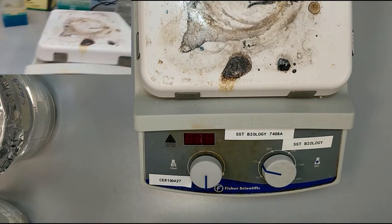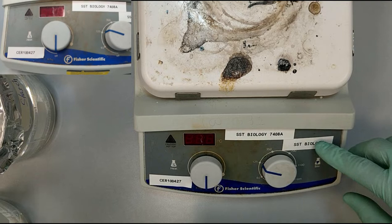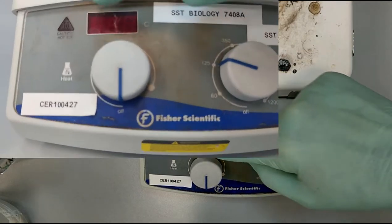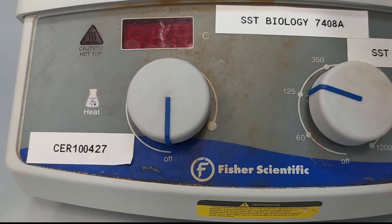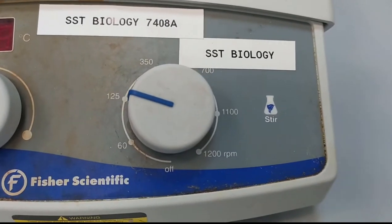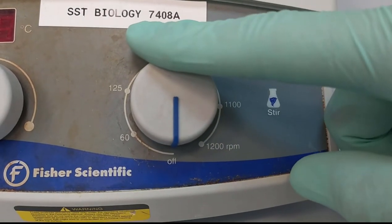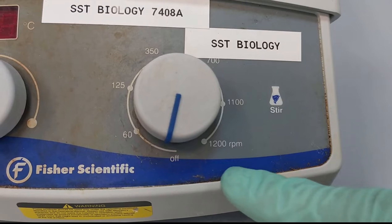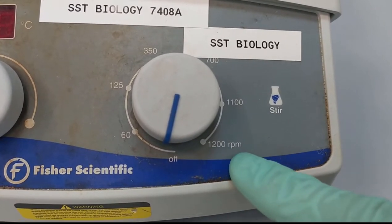So we set the stirrer in a way - as you can see here, we have two parts. One part is about the heating, the other part is about the mixing. We can set it to off here, or maximum to 1200 rotation per minute.